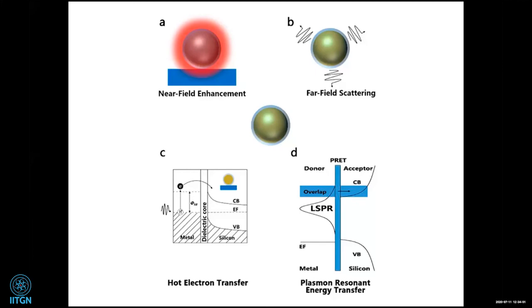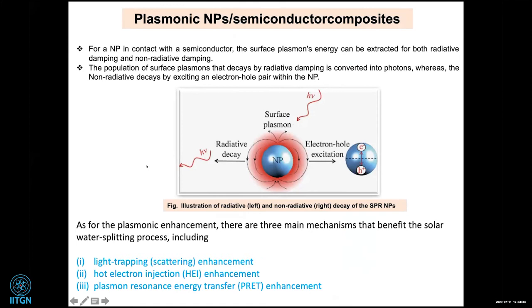There can be hot electron injection, especially when the particle size is of the order of tens of nanometers — in the case of gold, if it is less than 20 nm, you can see hot electron injection. The most commonly advocated effect is localized plasmon resonance energy transfer (PRET). If you put a plasmonic nanoparticle on a semiconductor surface, the plasma energy can be extracted in two ways: radiative damping — converted into photons — and non-radiative damping — which creates additional electron-hole pairs within the nanoparticle. There are three main characteristics of plasmonic enhancement with respect to water splitting.